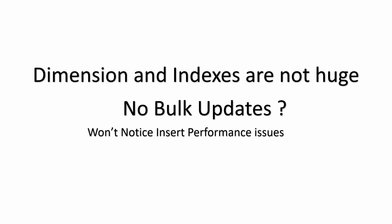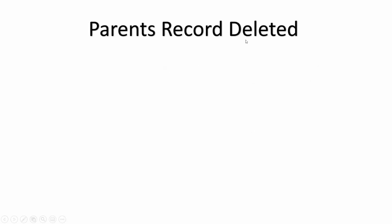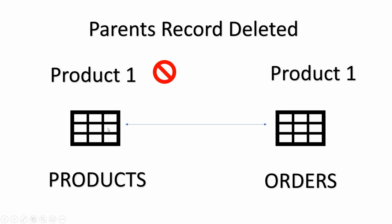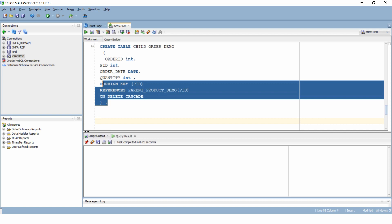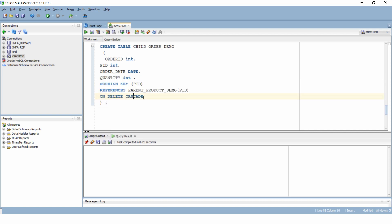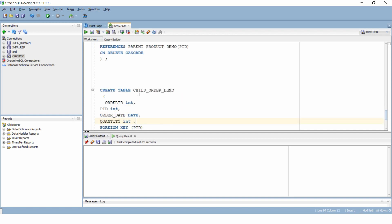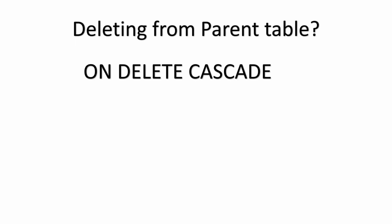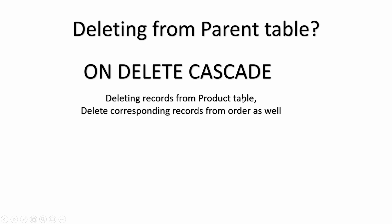Another problem can happen if you decide to delete a record from the parent dimension table. For example, if we try to delete product 1 from the product table because we're not planning to sell it in future, it gives us an error stating that this record exists in the child table and cannot be deleted. At the time of defining our child table, we have options that allow deleting data from the child table as well. If our application allows deleting records from the parent, we can use ON DELETE CASCADE, which means if a record is deleted from the parent, all its corresponding child records will be deleted as well.